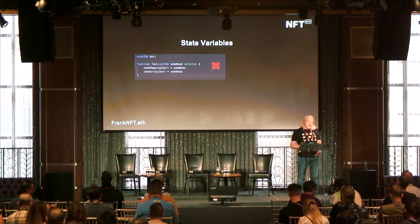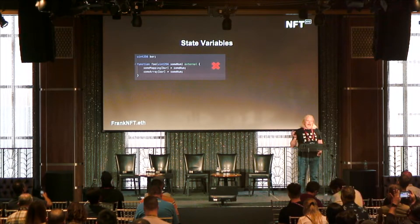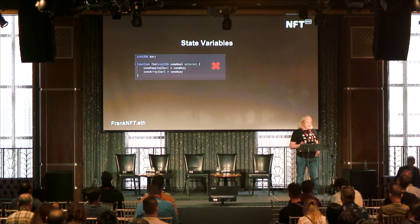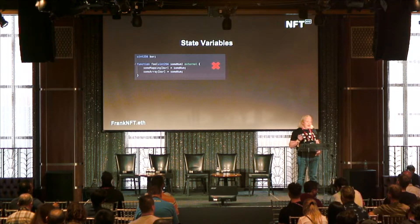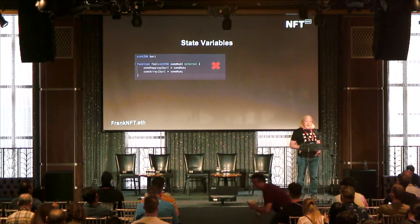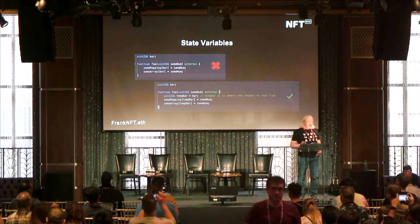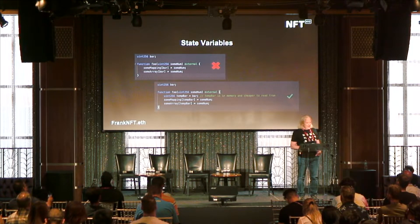Now we're going to do some code. State variables — almost all contracts have state variables. And if you use them more than once, they're actually an S load, and an S load will eat 200 units of gas. So it's more interesting to make it a memory load — just copy it to a variable first inside your methods and you will use less gas.